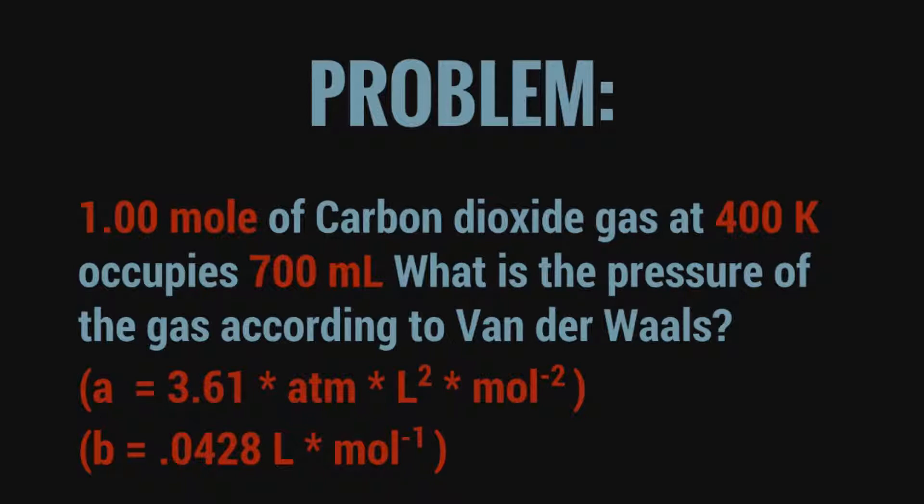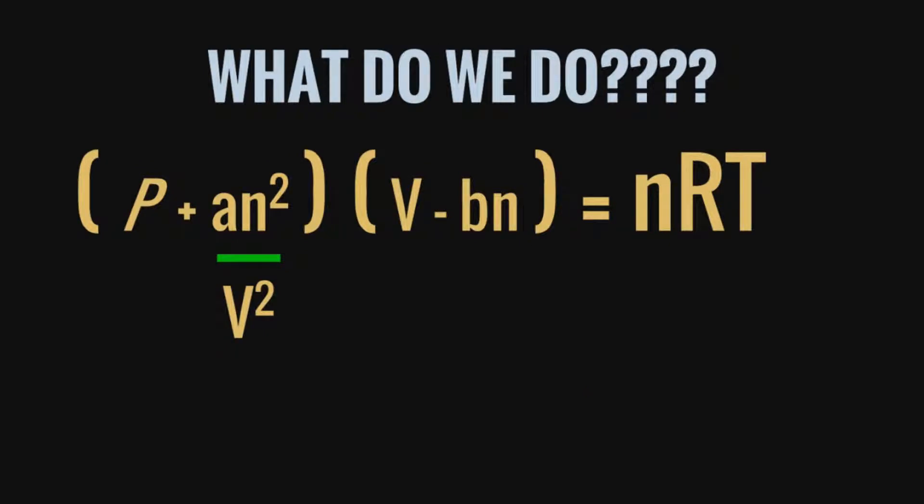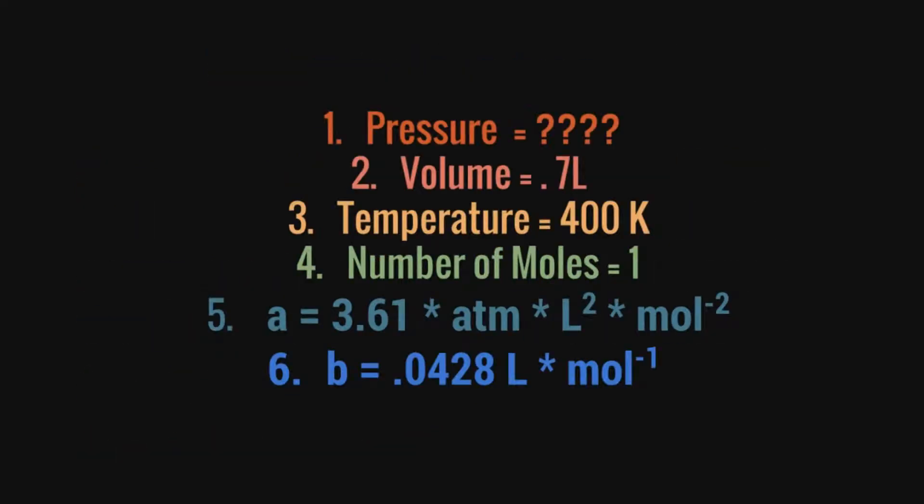All right. So we have a problem. One mole of carbon dioxide at 400 Kelvin occupies 700 milliliters. What is the pressure of the gas according to Van der Waals? So A is 3.61 atmospheres liter squared over mole squared. And B equals 0.0428 liters per mole. All right. So we look back at the equation and we want to plug in our values. So first thing we need to do is list out what we know and what we don't know. We're looking for the pressure. And this is everything else we do know. Okay. So list those out.